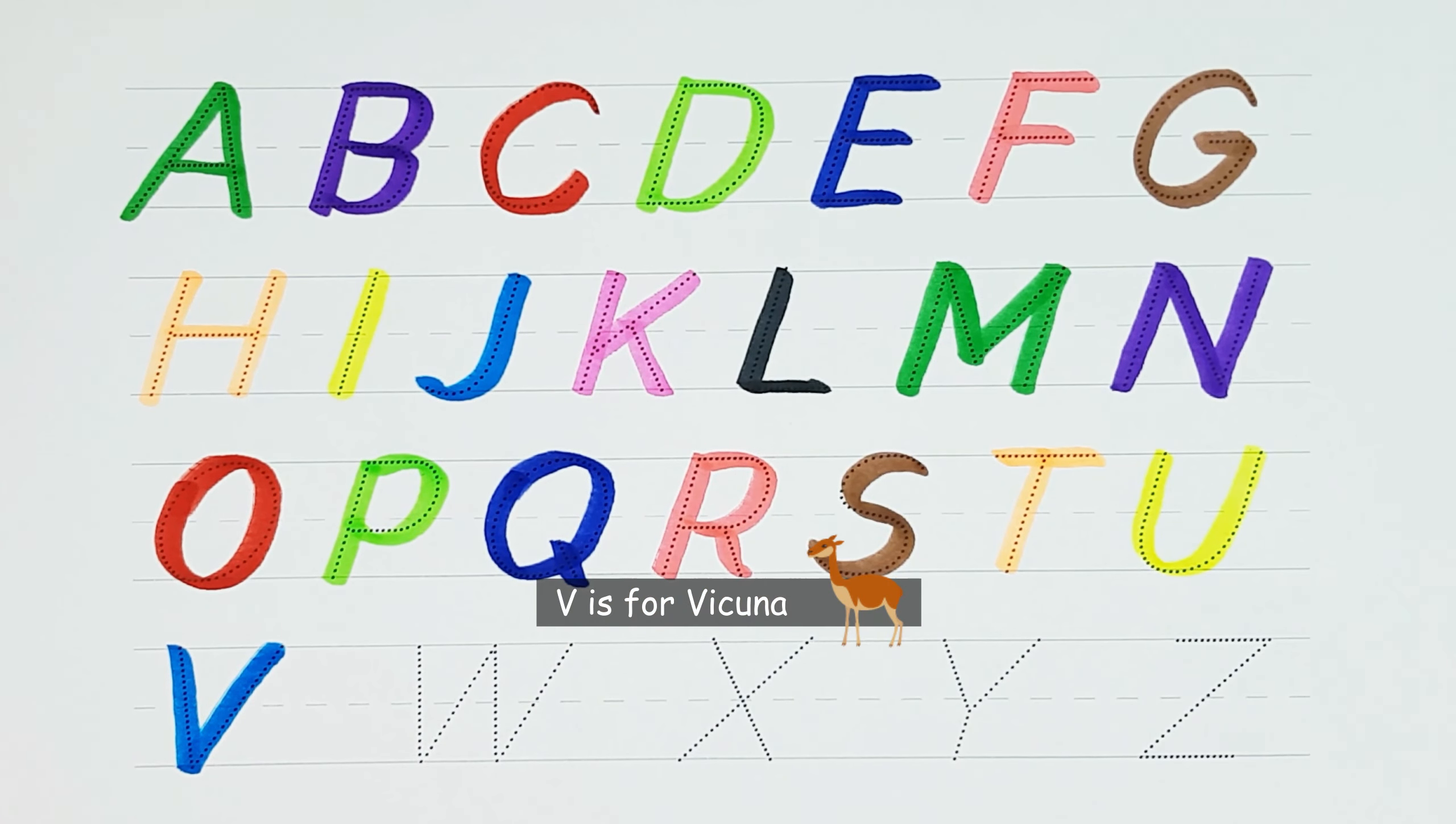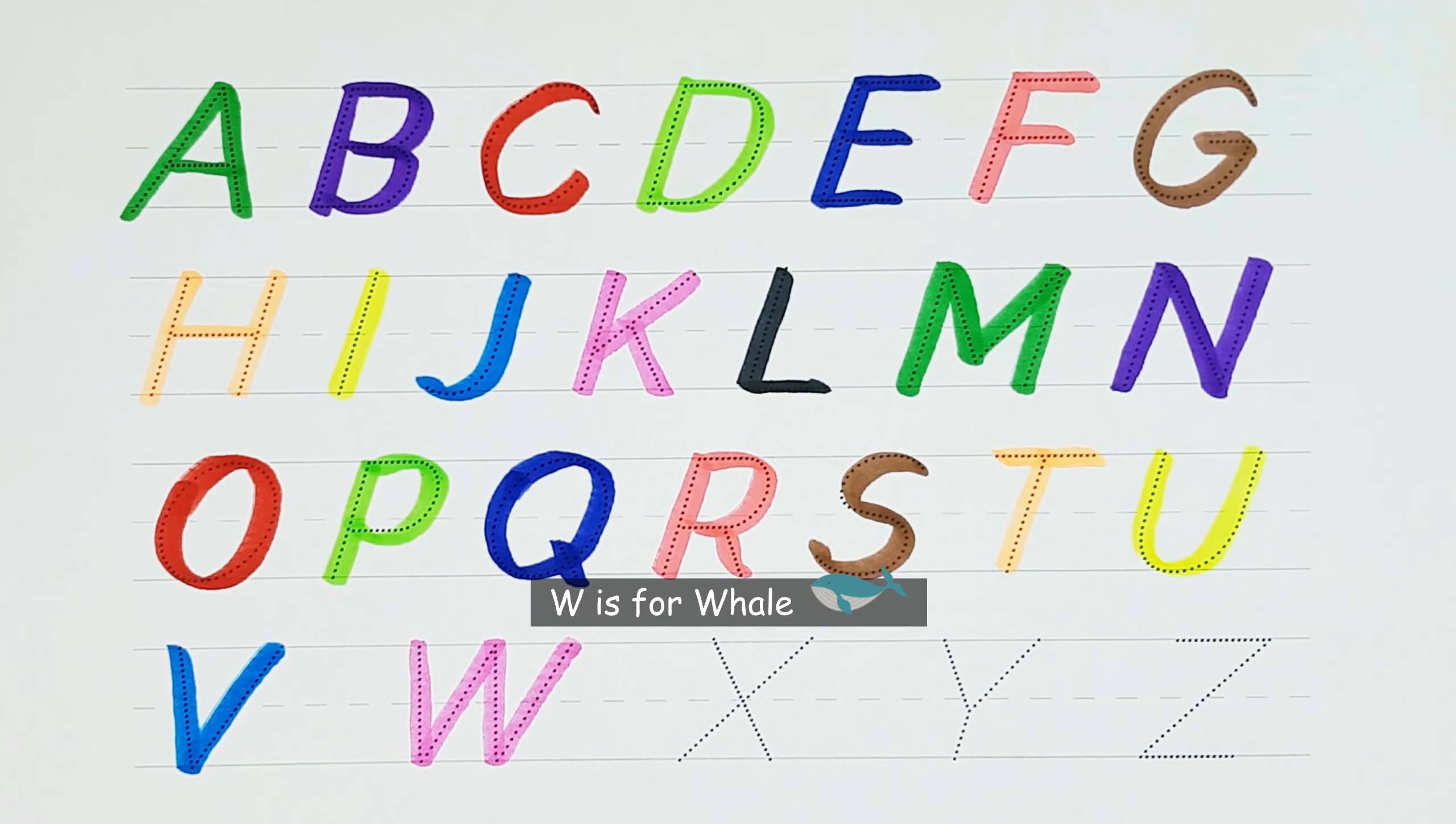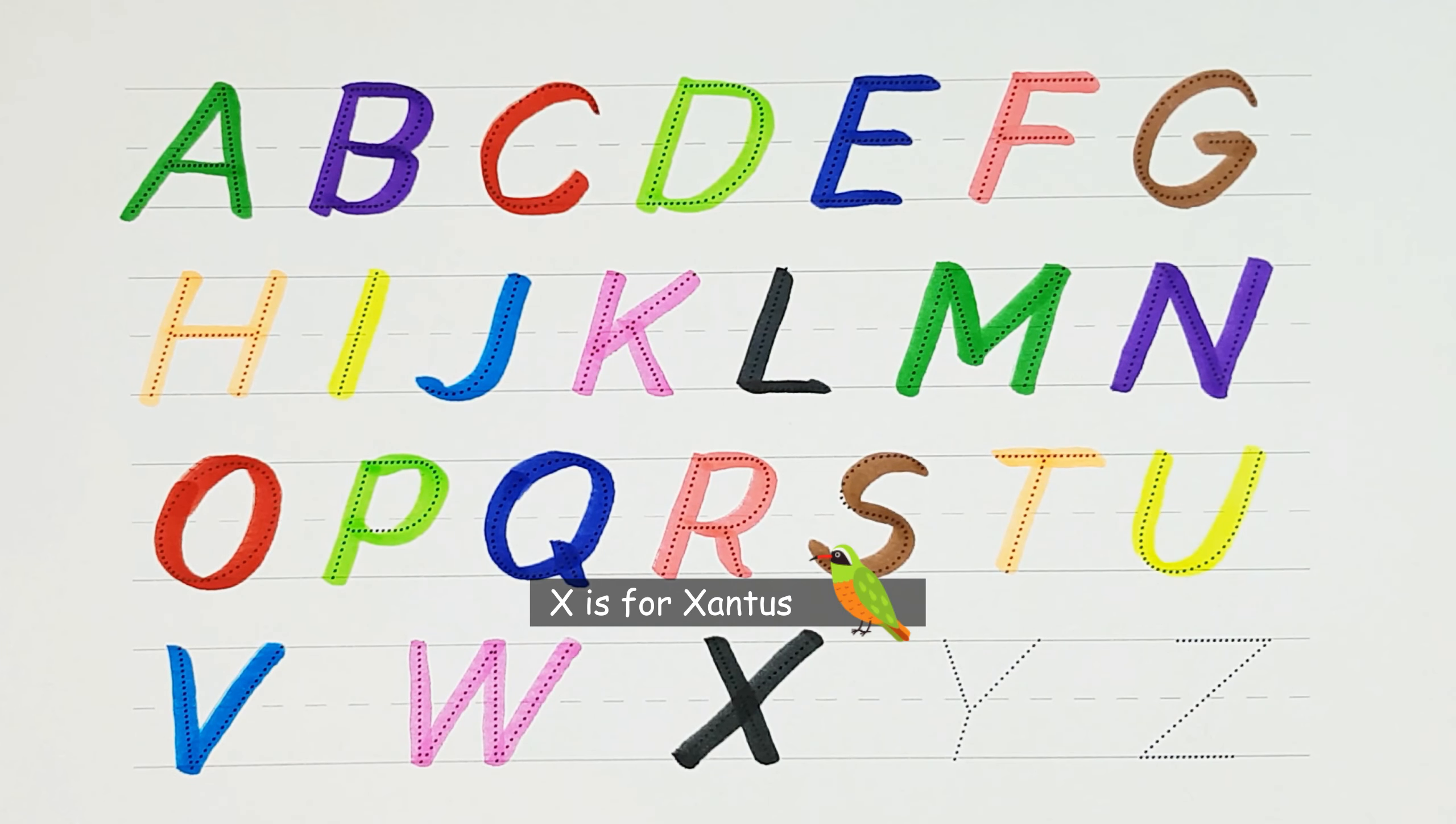V. V is for Vicuna. W. W is for Whale. X. X is for Xantus.